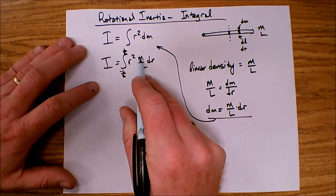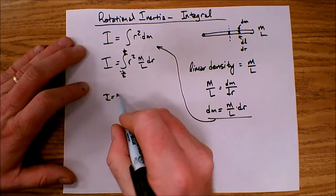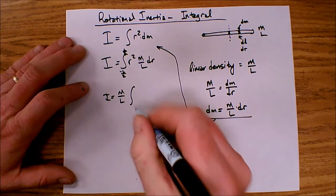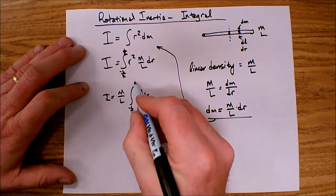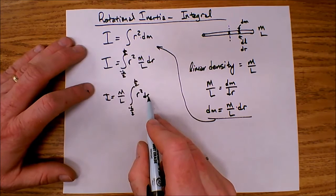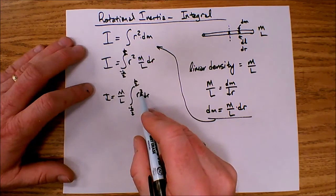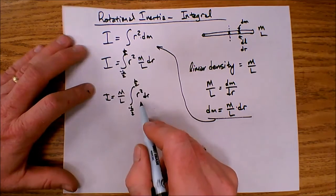Now m and l here is the total mass and the total length and that is constant. So that will come out of the integral. Now integral of r squared dr I know how to do that. I take the exponent, increase it by 1, divide by new exponent. So that becomes r to the third over 3.